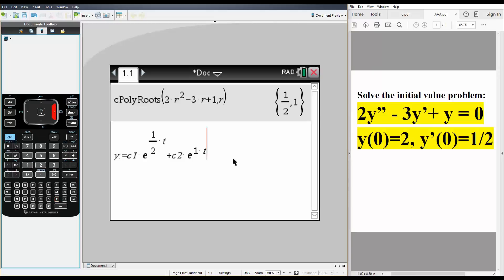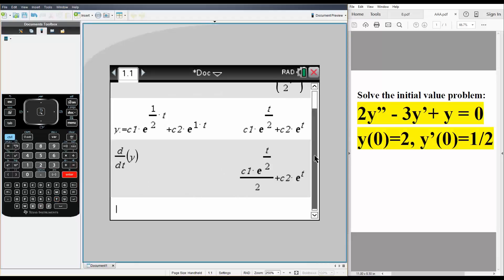Next is we want to take the derivative of y. So we do shift minus, it's going to be dt for y, hit enter. This is what we get.